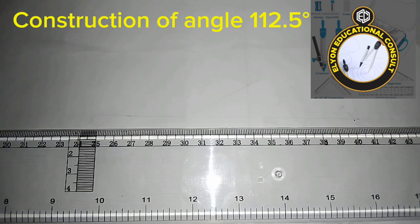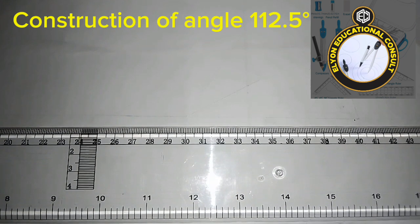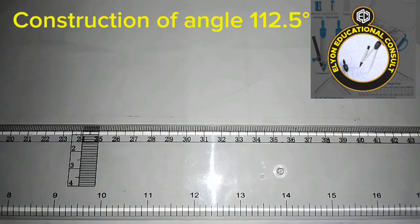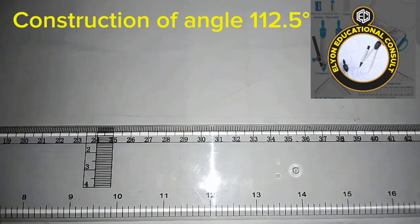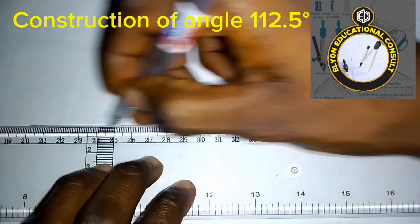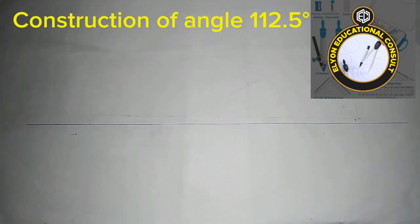added to angle 90 degrees to give us angle 112.5 degrees. To do that is very easy. We just quickly construct angle 90 degrees. Let's do that. We draw the baseline this way.